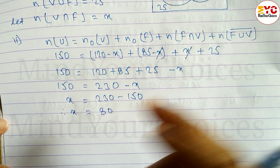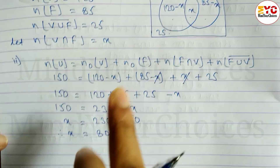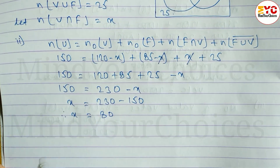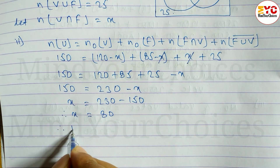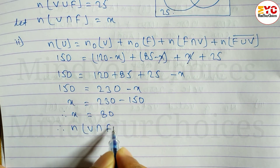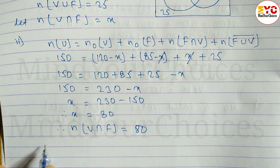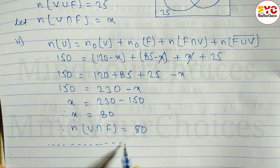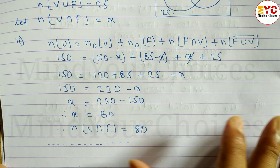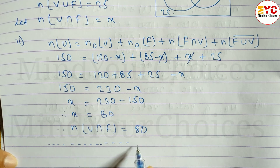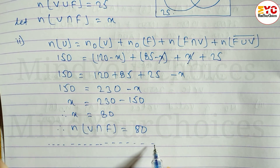That means the number of people who like both the games — volleyball and football — is 80. Therefore, N(B ∩ F) = 80. Hence, 80 people like to play both the games.